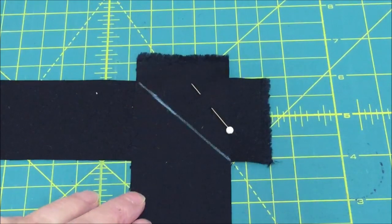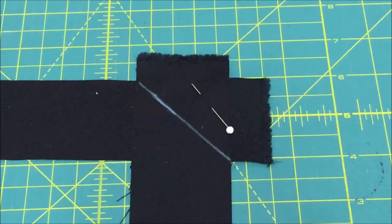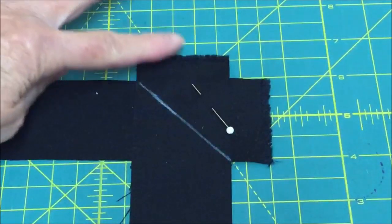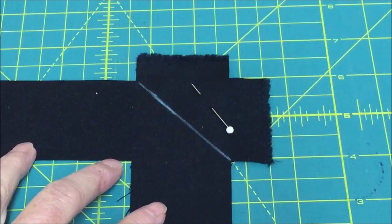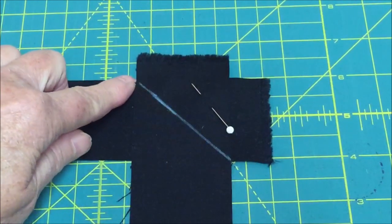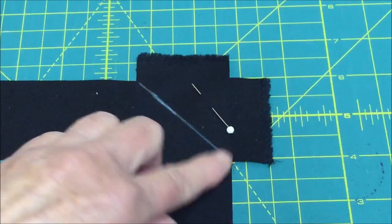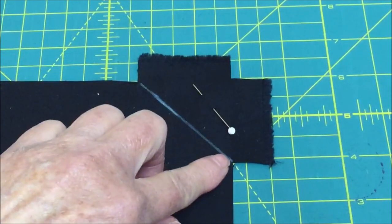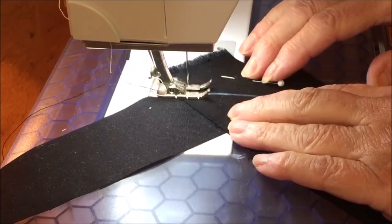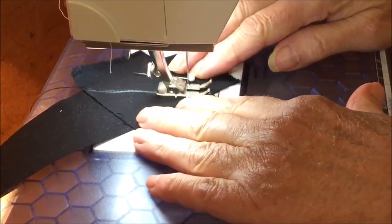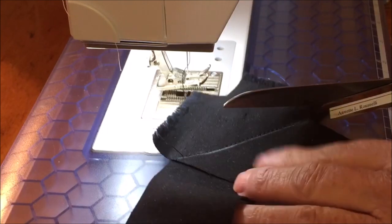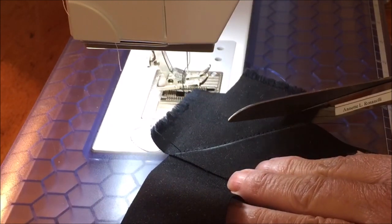To make a continuous strip, line the two pieces up. This is the selvedge. So I have that extending out over the side. And with the right sides together, I put a little pin just to make sure that they hold in place. And draw a diagonal line from corner to corner. Now we're going to be sewing along that diagonal line.